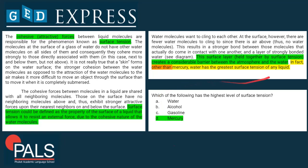In fact, other than mercury, water has the greatest surface tension of any liquid. It's a bit of a vocabulary question — an English language question. Are you able to understand what 'other than' means? It means 'except mercury' — water has the greatest surface tension. That means only mercury has a higher surface tension, so mercury is the correct answer.